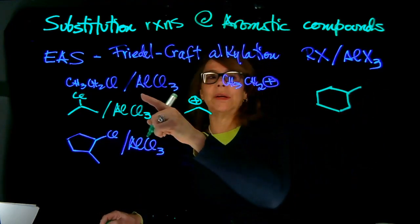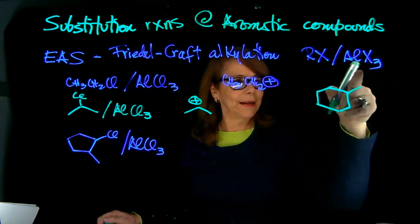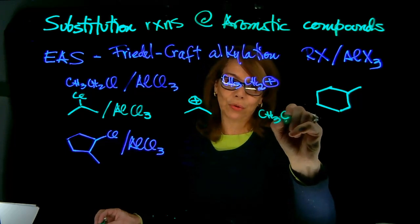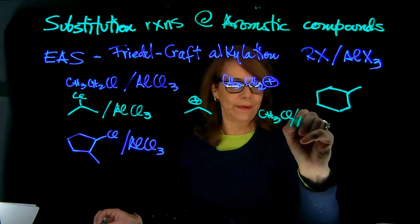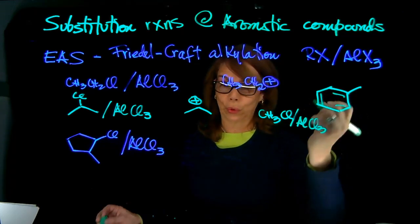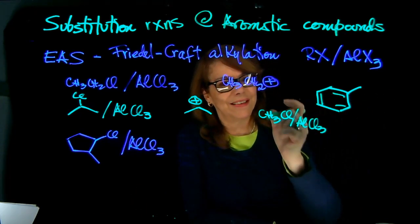It is about installing an alkyl group. For example, if you use an alkyl halide, say that you're using methyl chloride with Lewis acid, aluminum trichloride, you will produce toluene, methyl benzene.